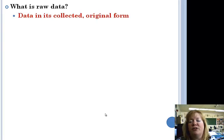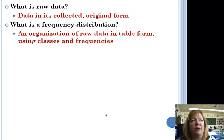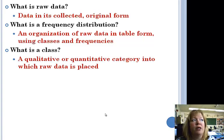Raw data is just like those test scores that you had. It's data that's collected in its original form. A frequency distribution is an organization of raw data in table form using classes and frequencies, like we did today with your test scores. What is a class? It's a qualitative or quantitative category into which the raw data is placed. In our case today, it was the letter grade. A's, B's, C's, D's, and F's. Those were our classes.